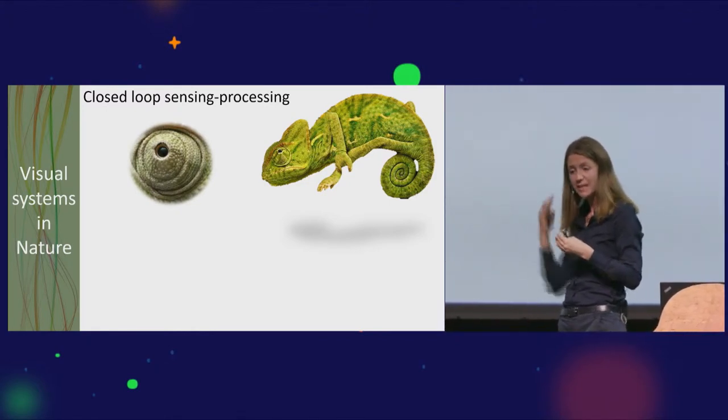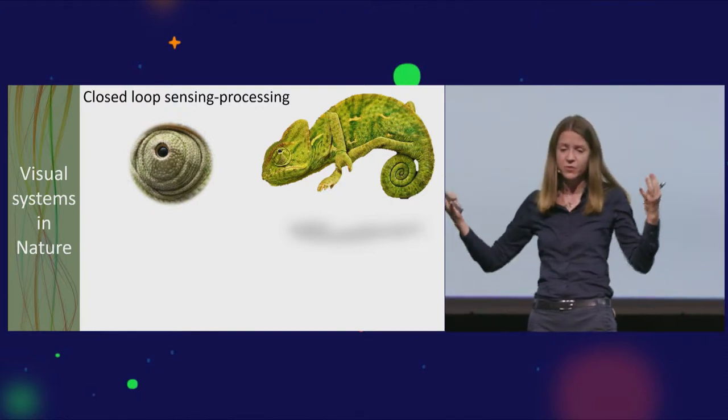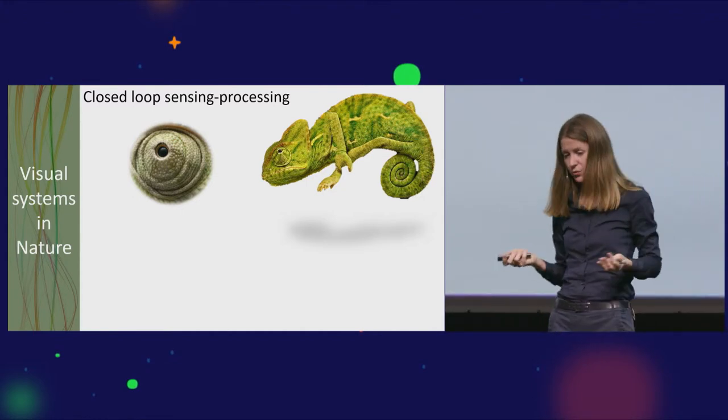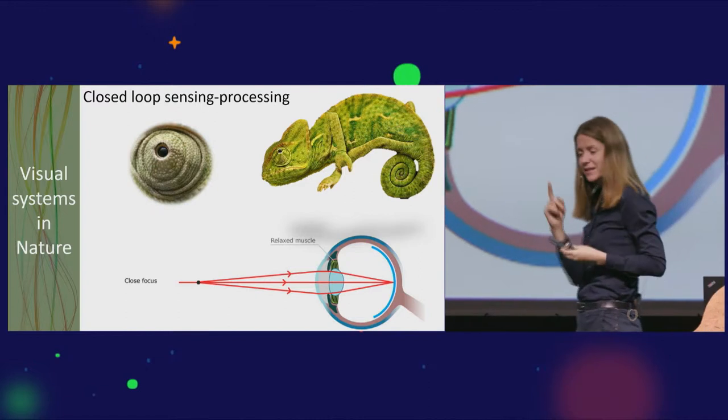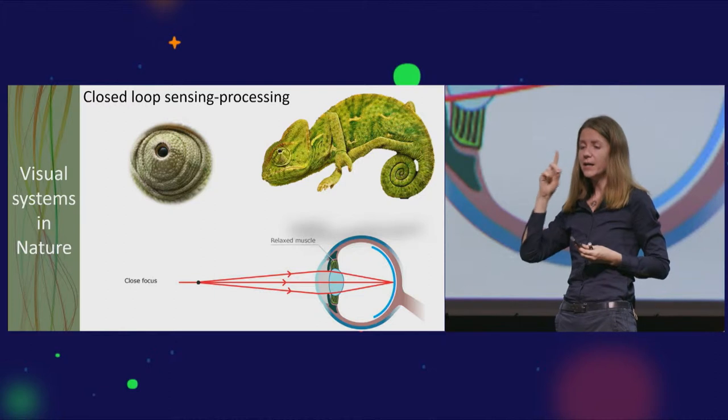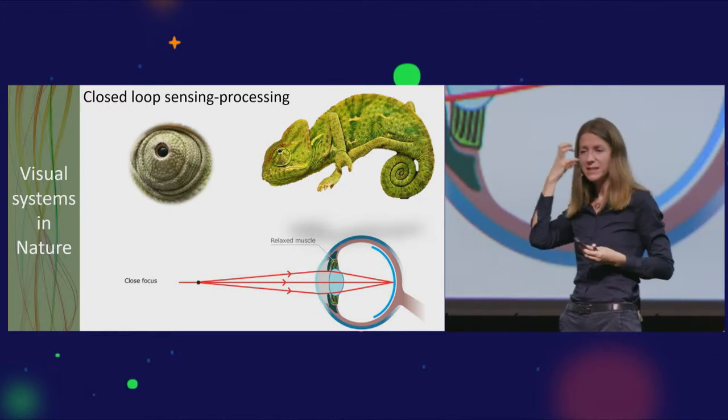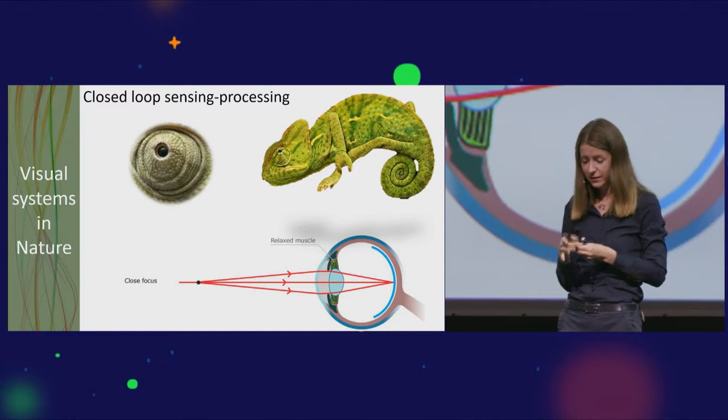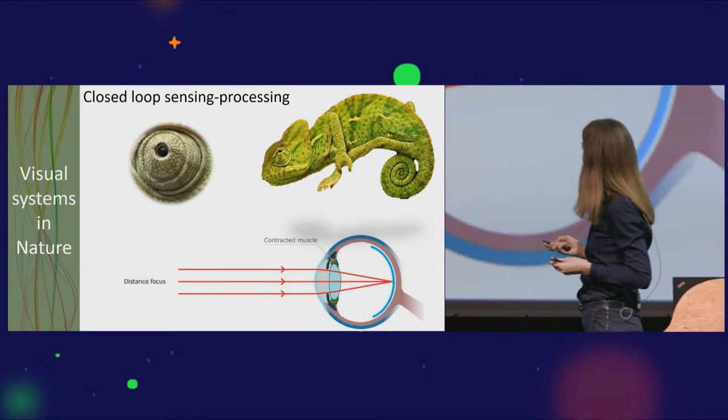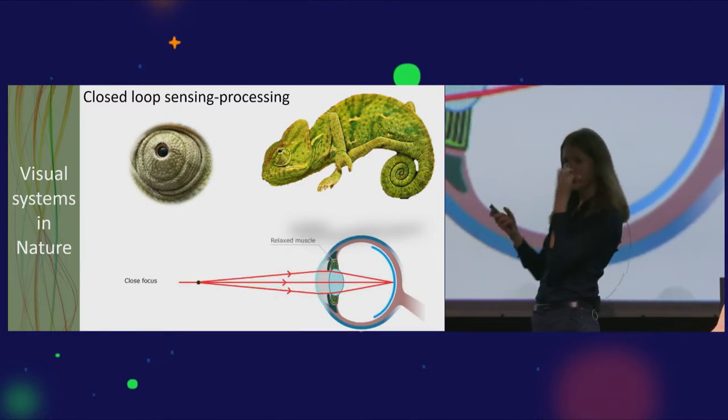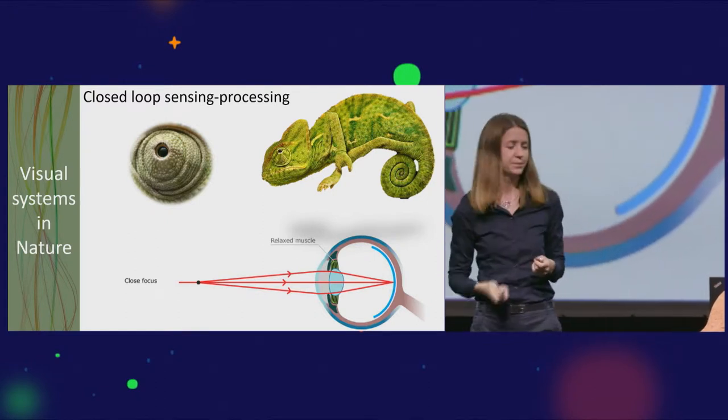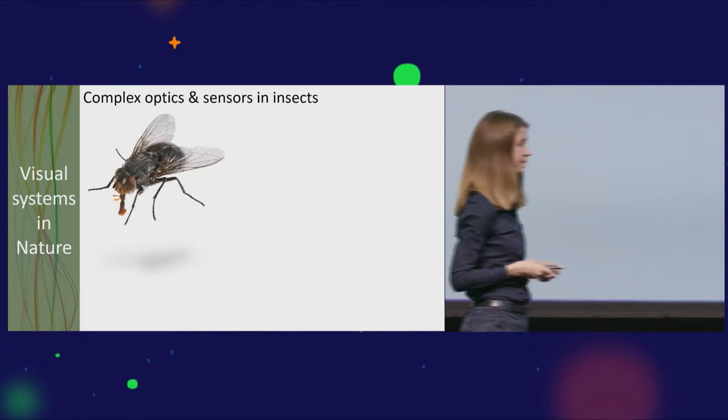Let's look at the next example, the chameleon. As a predator, it needs to estimate distance to prey. However, it cannot use stereo vision because its eyes are on the sides of its head and don't overlap. It uses a different signal. If you try to focus on your finger and move it close and farther from your eye, you notice muscle tension. There's a motor signal that can be used to estimate depth, and that's what the chameleon is using.